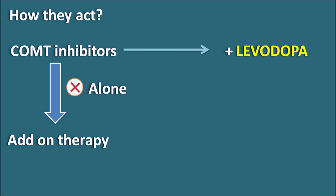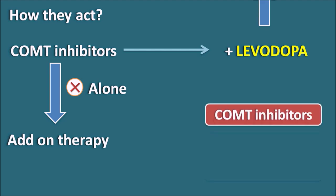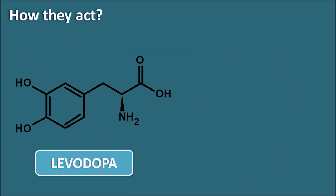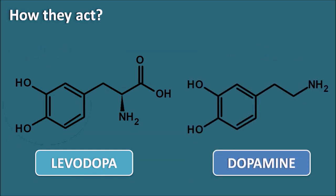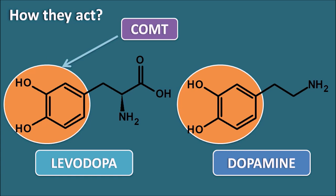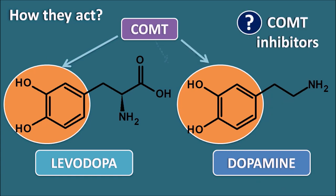What we can conclude is: do COMT inhibitors act on levodopa or on dopamine? Because levodopa and dopamine both have the catechol moiety. That means COMT, catechol-O-methyltransferase enzyme, can produce the metabolism of both levodopa as well as dopamine. Now, how do these COMT inhibitors work — are they inhibiting the metabolism of levodopa, or the metabolism of dopamine? Let us see it in detail.